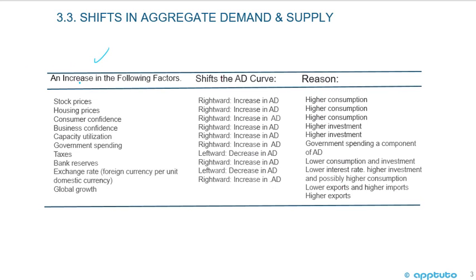We have a table here where we look at an increase in certain factors, the impact and shift on the aggregate demand curve, and the reason why. An increase in stock prices is a rightward shift in aggregate demand — higher consumption. An increase in housing prices is the same. That's because assets equal liabilities plus equity, so increasing assets increases equity, leading to higher consumption.